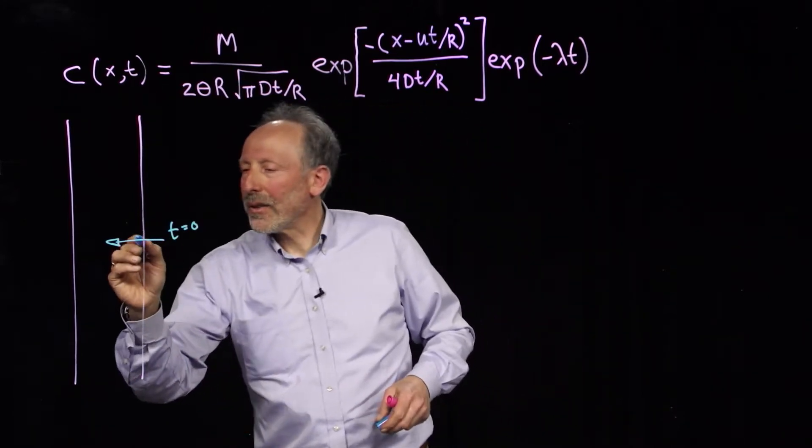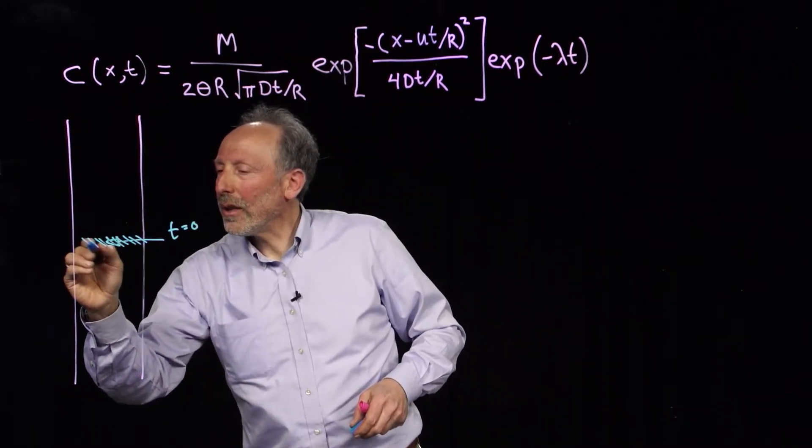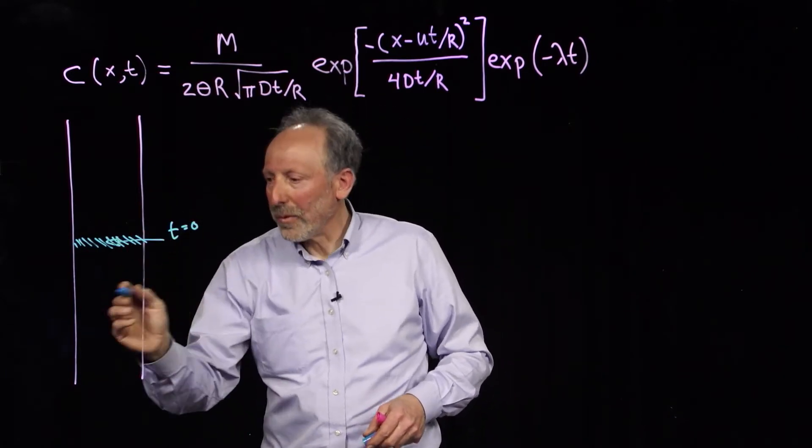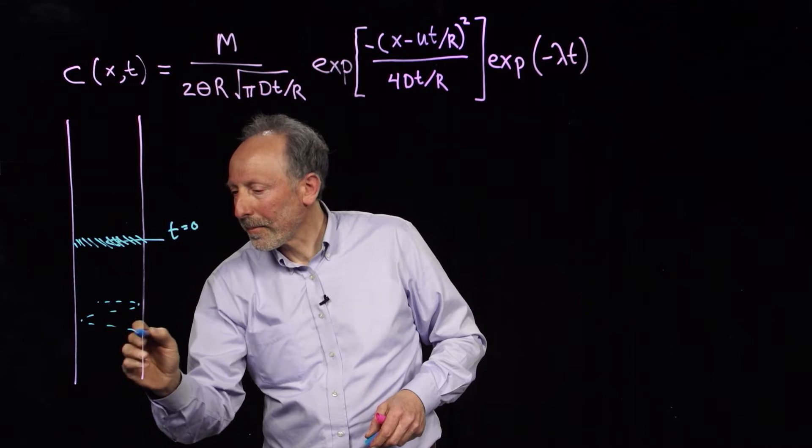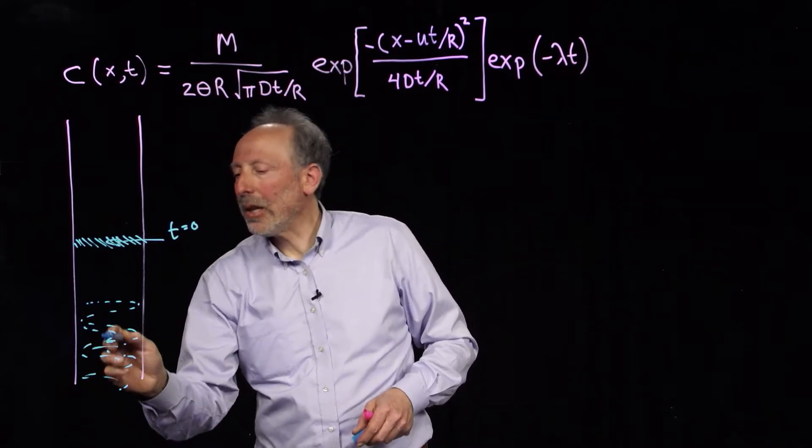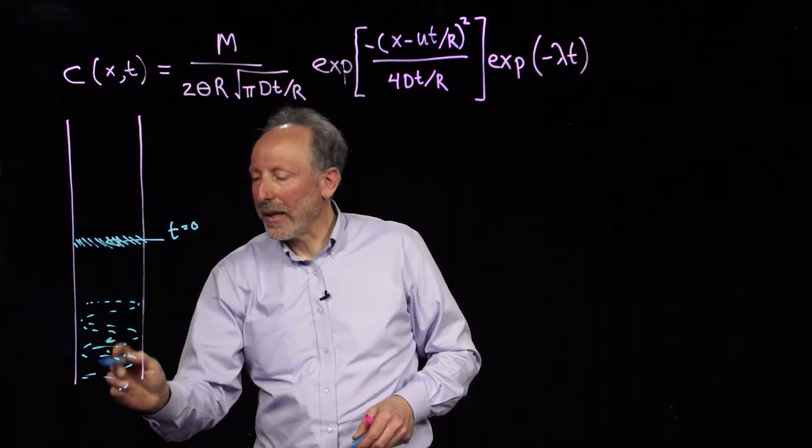And what's gonna happen is this region of material, let's suppose that the water's moving this way, it'll spread out. But it's gonna still be more concentrated in the middle, less concentrated at either end of the plume.